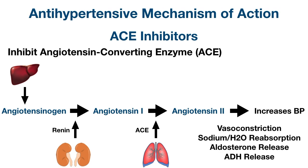Angiotensin 2 binds to angiotensin receptors on blood vessels, which leads to vasoconstriction and increases blood pressure. Angiotensin 2 also increases reabsorption of sodium and water in the kidneys and augments the release of aldosterone from the adrenal cortex and antidiuretic hormone from the posterior pituitary gland, all of which work to increase blood pressure.